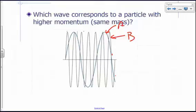B has higher momentum, why? P is H over lambda, right?